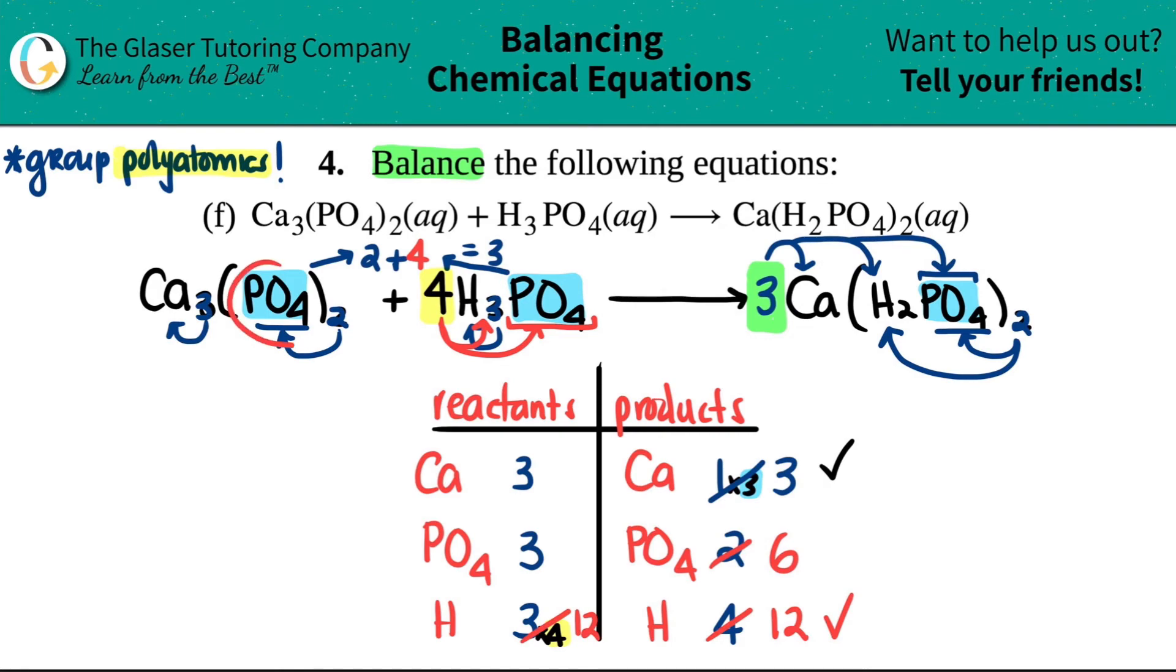I didn't put anything in front of here, so I still have two phosphates here. But two plus four is six. And look at that—by balancing one thing, you really balance the other thing as well. Everything is balanced here now. Three, three, six, six, twelve, twelve. So that's the end.